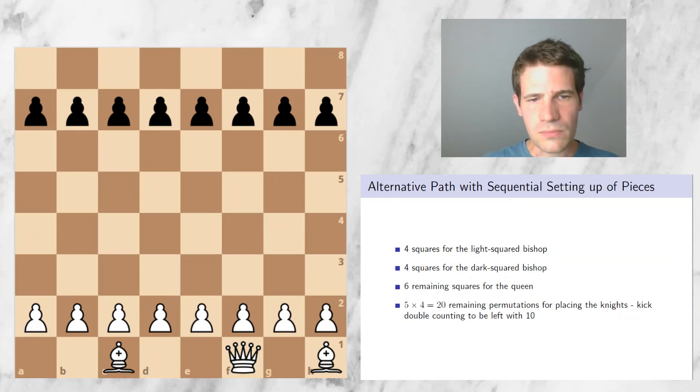Now let's consider the knights. We have 5×4 possibilities of placing the knights. These are, again, the permutations. The knights are equal, so there is no white squared or dark squared knight in that sense because there is no constraint. For instance, if I put my knight on A1, then there are four different squares on which I can put the second knight and so forth. But again, to avoid double counting, it doesn't matter if I put this knight on A1 and this knight on B1 or if I swap these two, I will always end up with the same position. Therefore, from the 20 permutations that we have, we have to deduct half of them in order to get to different ways of arranging the two knights. This leaves us with 10 ways of arranging the two knights.